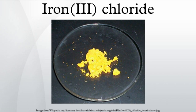Oxidation of iron(2) chloride with chlorine: 2FeCl2(aq) + Cl2(g) → 2FeCl3(aq). Oxidation of iron(2) chloride with oxygen: FeCl2(aq) + ¼O2 + HCl → FeCl3(aq) + ½H2O.